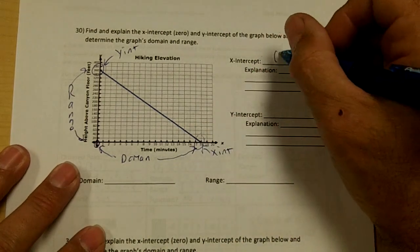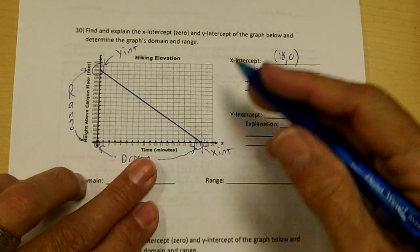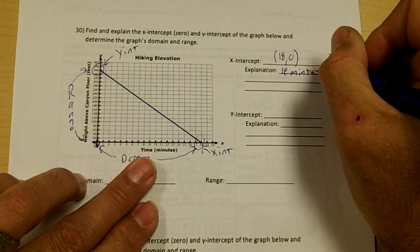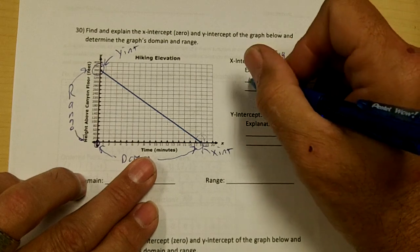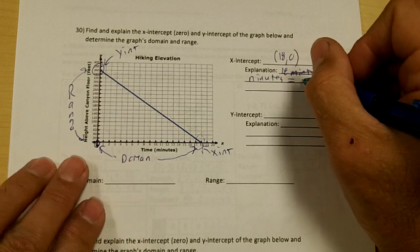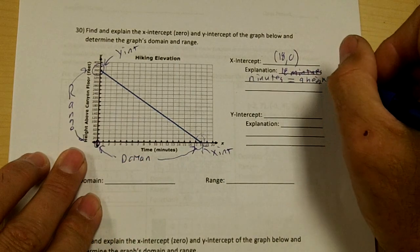My x-intercept is going to be 18 comma zero and this is 18 minutes. 18 minutes equals a height of zero.